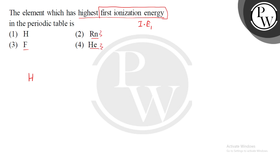Helium is present in the first period. Radon is present in a lower period. Fluorine is present in the 17th group. Helium is present in the 18th group. Hydrogen is present in the periodic table, and fluorine is in the 17th group.